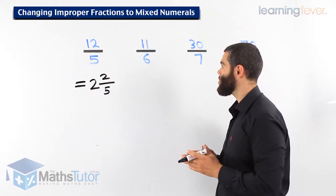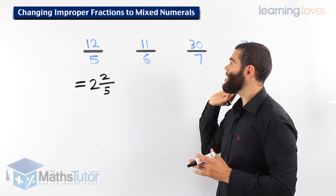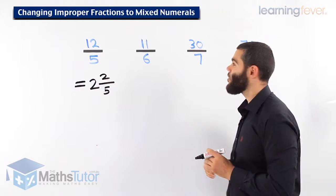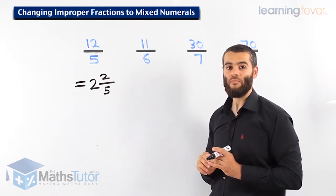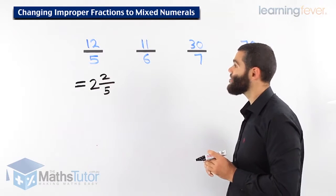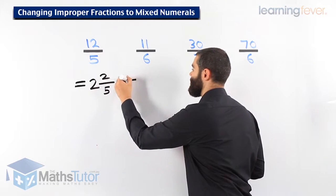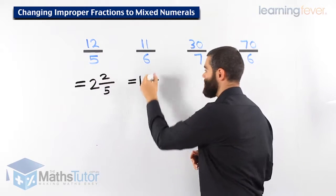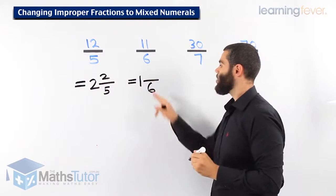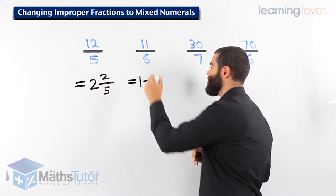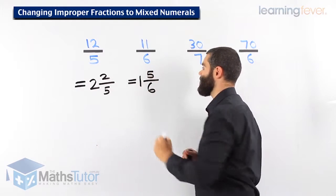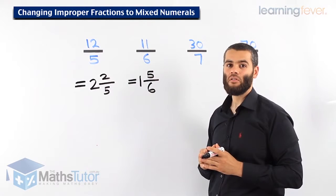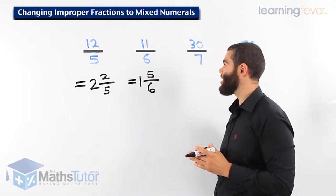Let's do this one. 11 over 6 — we want to write it as a mixed numeral because it's in improper form. How many 6's go into 11? There is only one 6 that can fit into 11. The denominator stays there. One 6 goes into 11, and 5 is remaining. 6 into 11 goes once and you have 5 remaining to make 11.